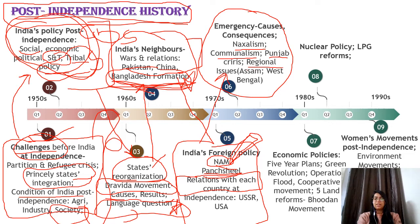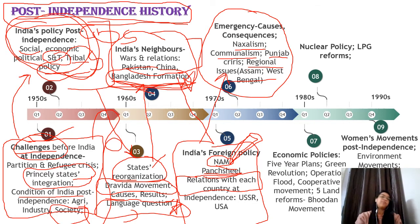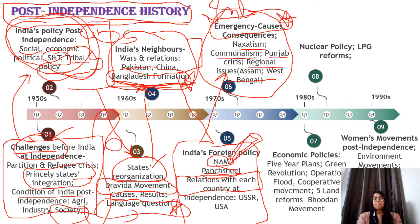Then you will cover regional issues — what was happening in Assam and West Bengal, the Assamese-Bengali language riots, what was happening in different regions, what was happening in Manipur, the refugee crisis, and North East issues. You will cover all of India's internal political and security issues. Emergency is obviously another very important topic — causes, results, and consequences.